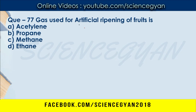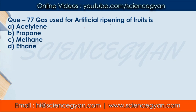Question number 77: The gas used for artificial ripening of fruits — when we artificially ripen raw fruits, which gas is used? Note that the question specifically asks about artificial ripening. This question is asked very frequently in competitive exams in General Science. The correct answer is A — Acetylene.